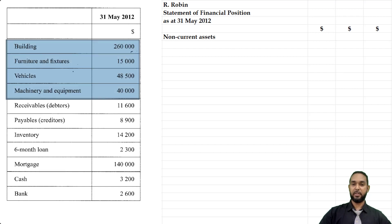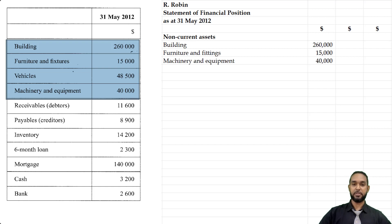They were kind enough to provide us with the non-current assets, so we're just going to fill those in. We're going to start with building $268,000, furniture and fittings $15,000, machinery and equipment $48,000, and vehicles $48,500, giving us a subtotal for non-current assets of $363,500.